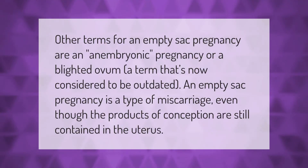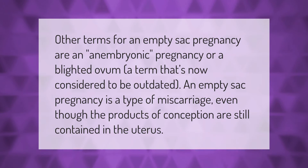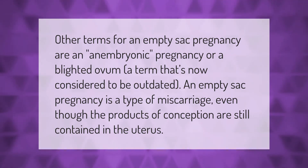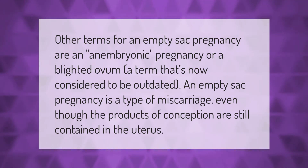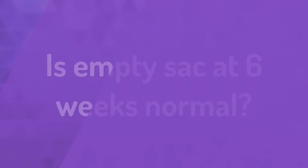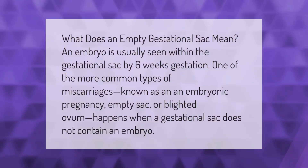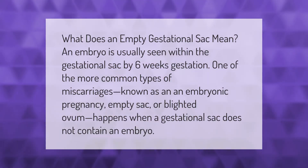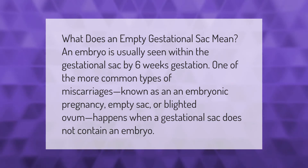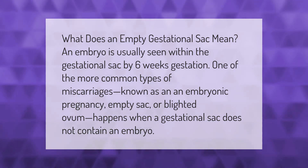Other terms for an empty sac pregnancy are anembryonic pregnancy or blighted ovum, a term that's now considered to be outdated. An empty sac pregnancy is a type of miscarriage even though the products of conception are still contained in the uterus. What does an empty gestational sac mean?